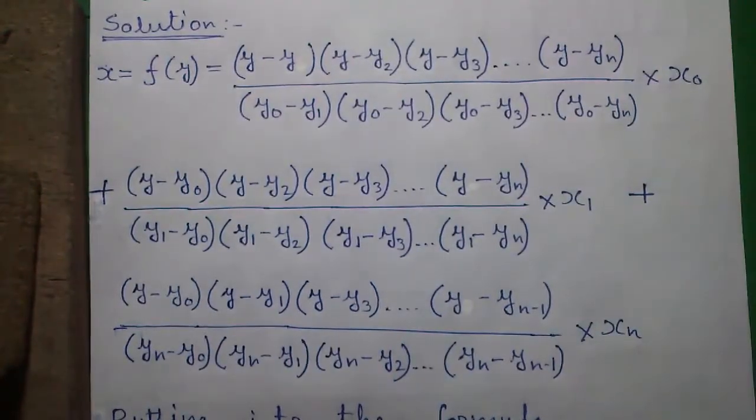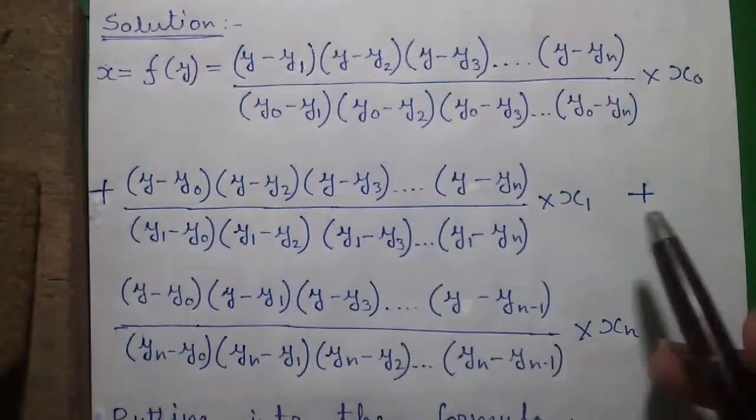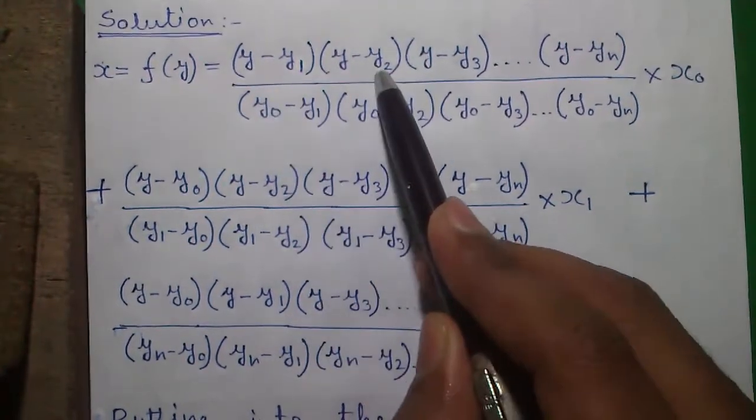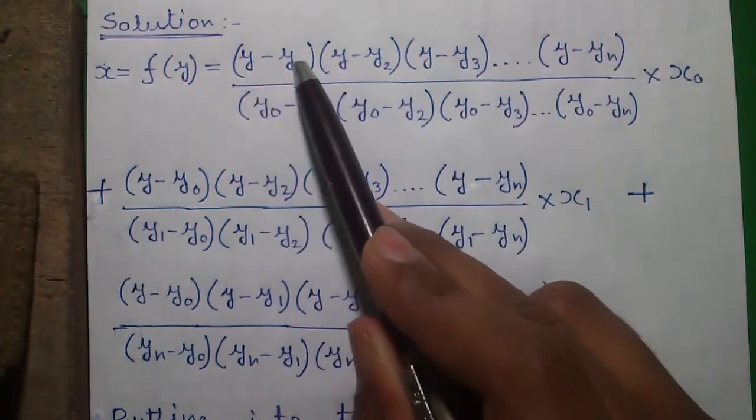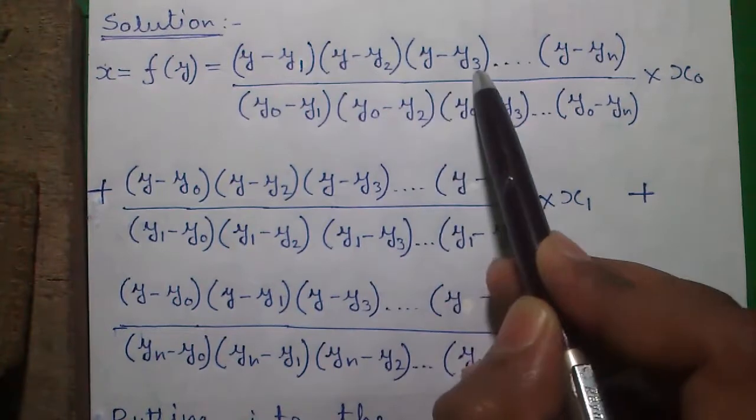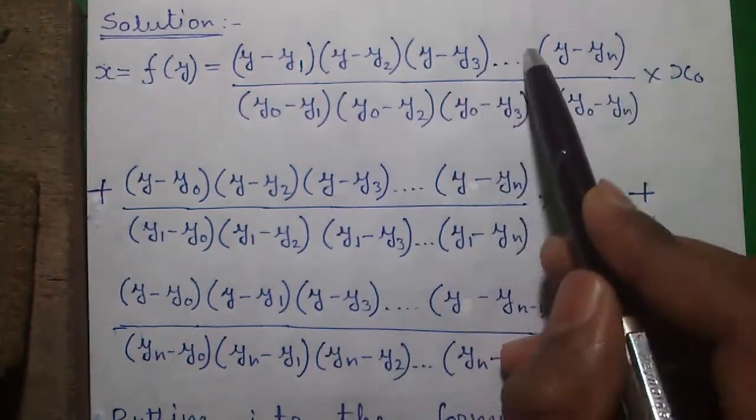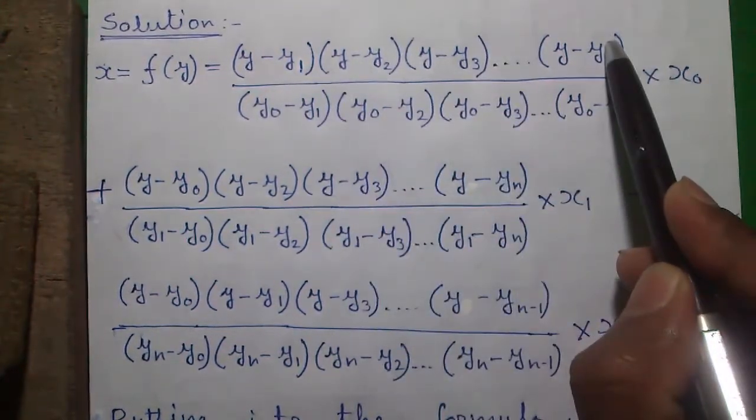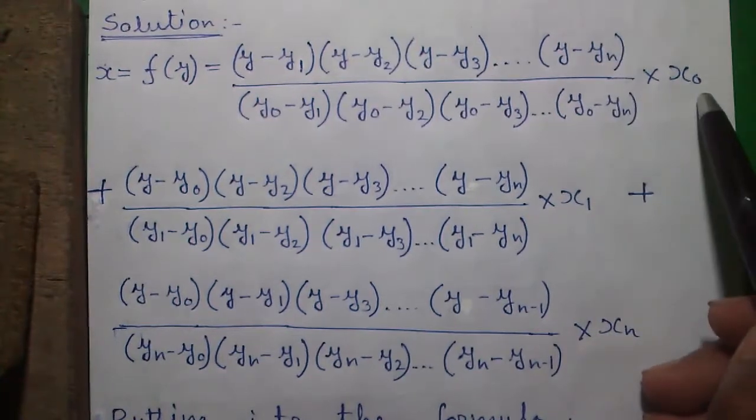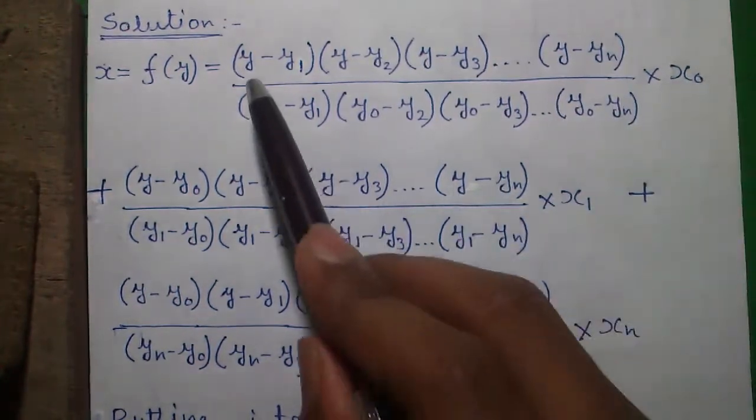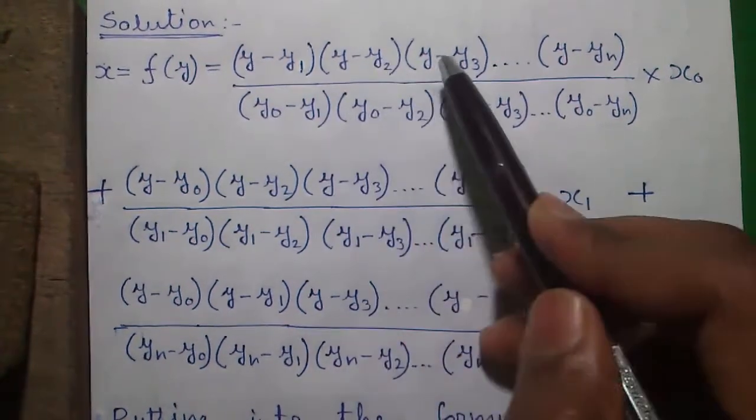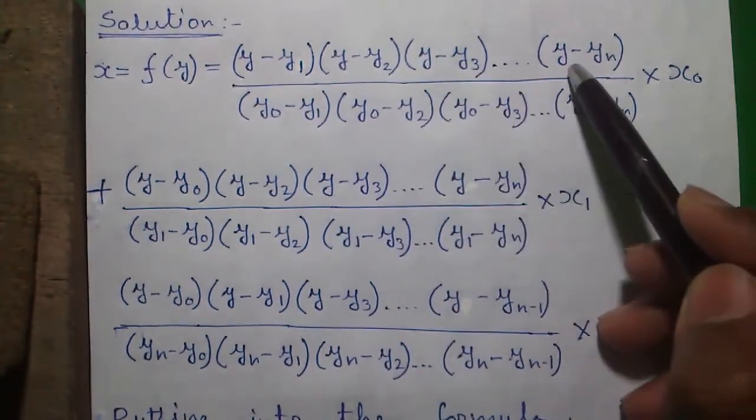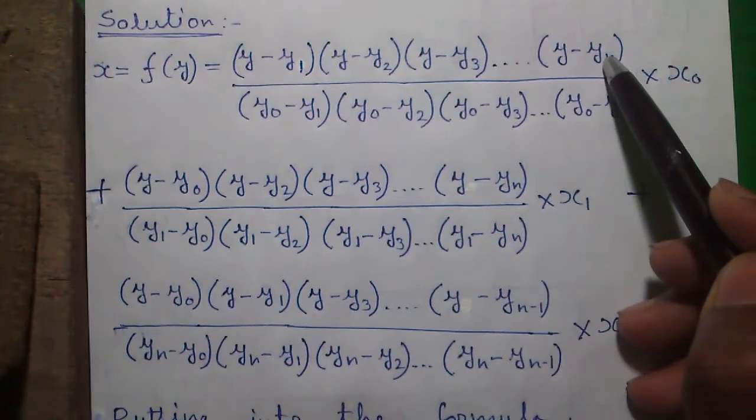This is our formula, this is just the inverse formula of the Lagrange interpolation formula. Don't be afraid by the formula, it's very easy. We subtract each value from y: y minus y1, y minus y2, y minus y3 and so on. This is called the first term. In first term we will deal with x0 value and y0 value.